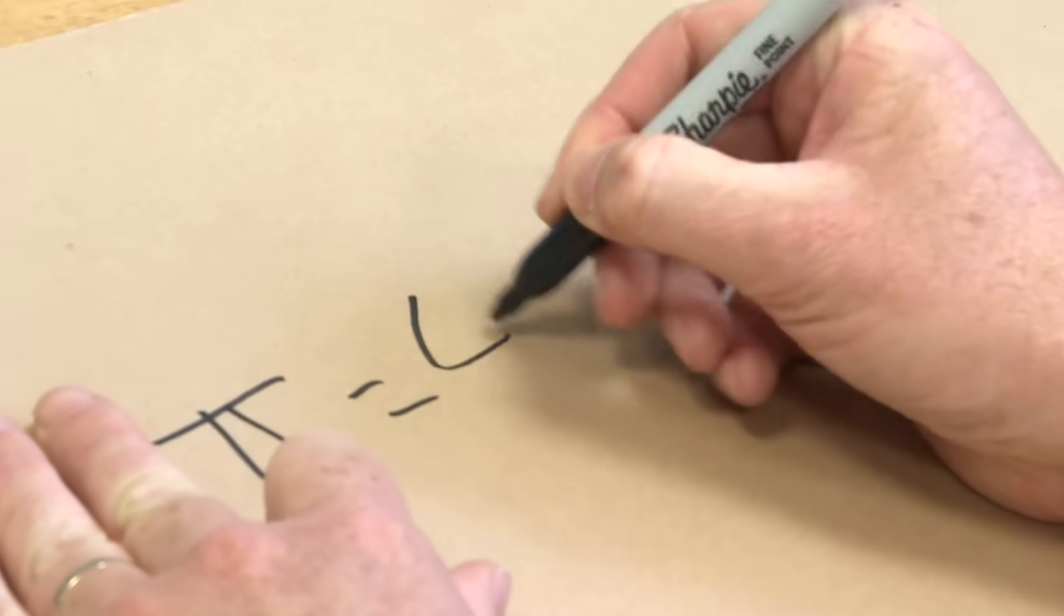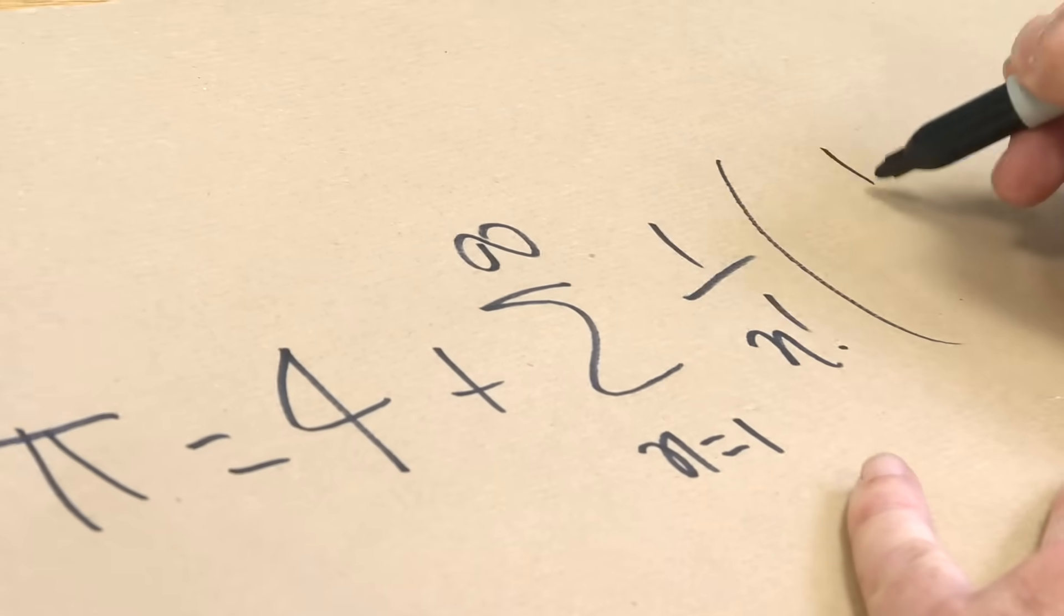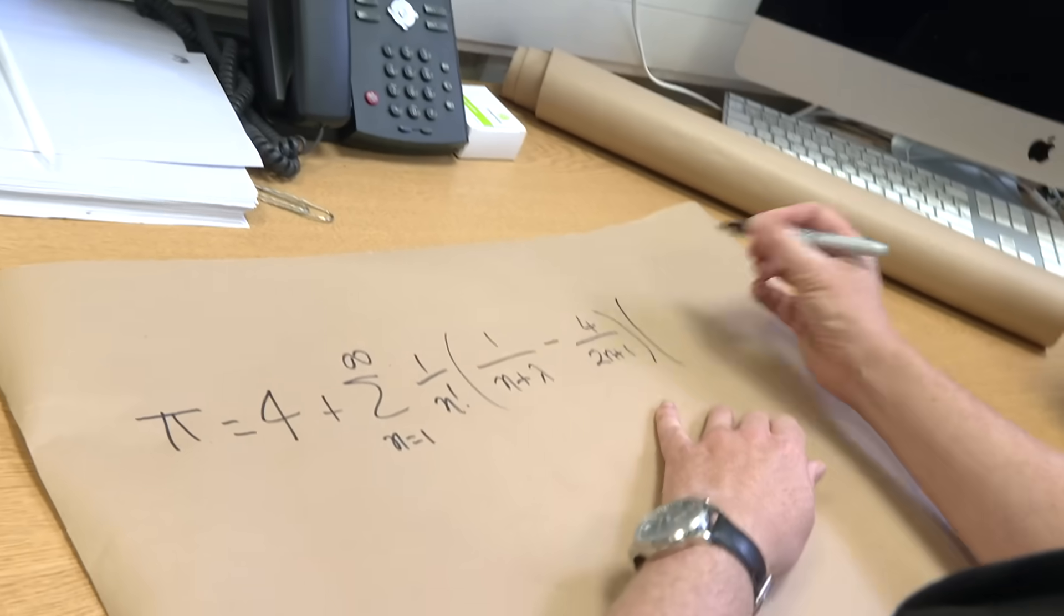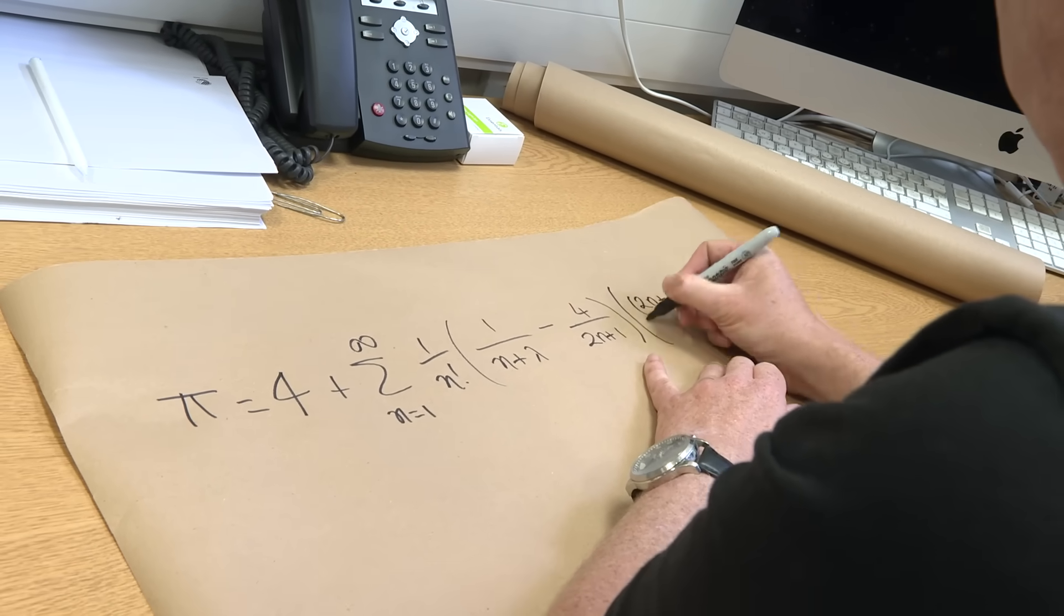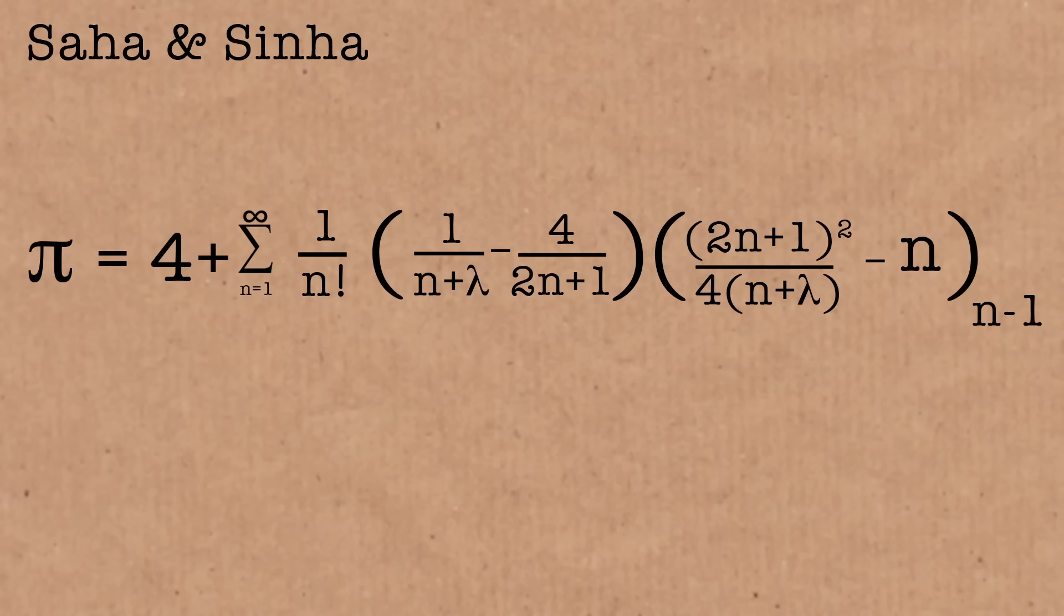So, to our new representation of Pi. Gonna need another piece of paper, Brady. The new representation of Pi from Sinha and Saha. Now, they actually had a really lovely way of expressing this. They say, if Pi is the meal, then the series is the recipe. And I kind of like that, because it basically says you use the recipe to figure out what Pi is. So what was their series? Pi is equal to four, sum from n equals one up to infinity, one over n factorial, one over n plus lambda, minus four over two n plus one. And then we have this thing, two n plus one squared over four n plus lambda, minus n, n minus one.